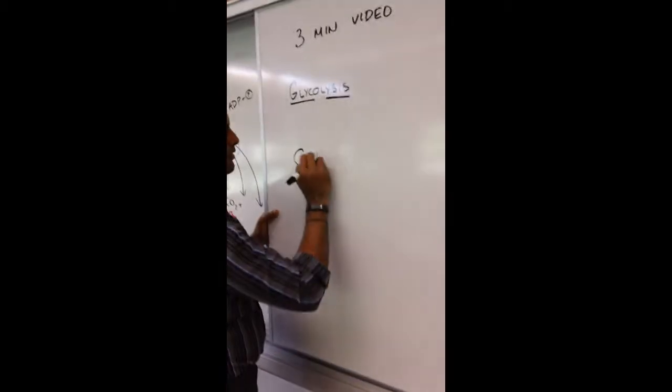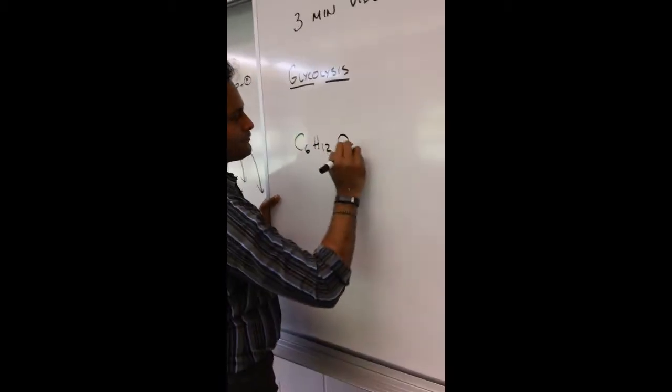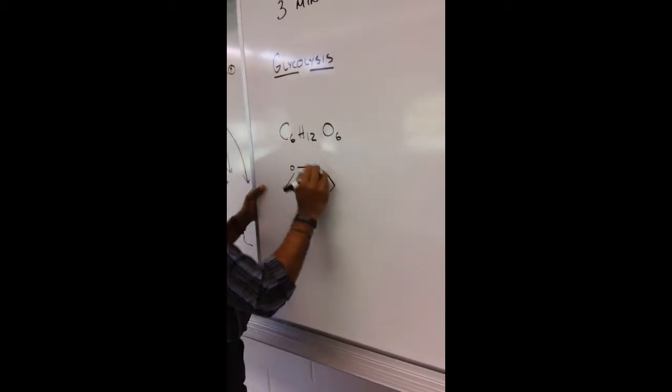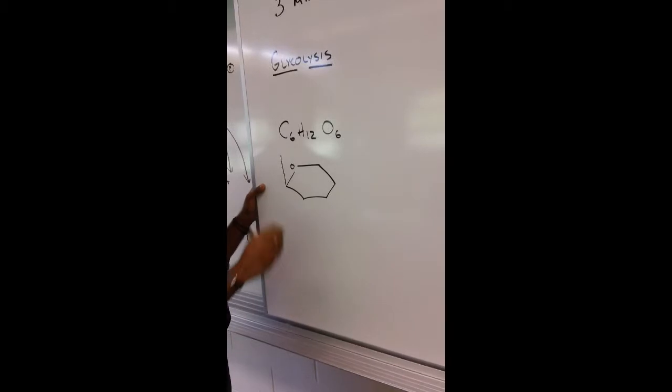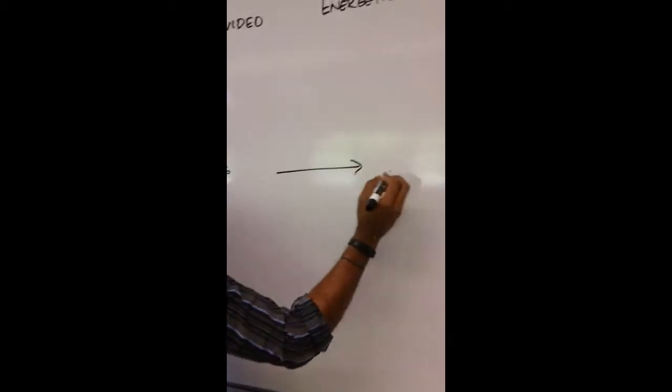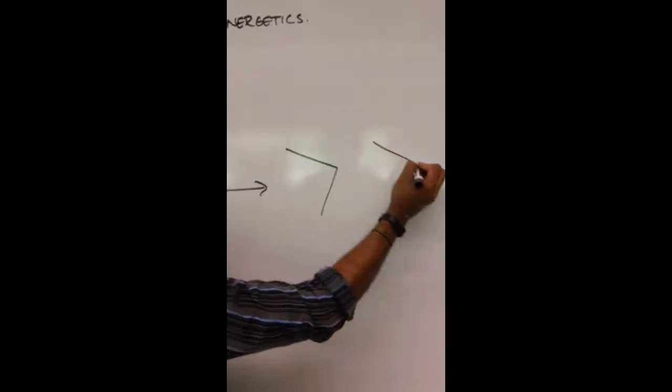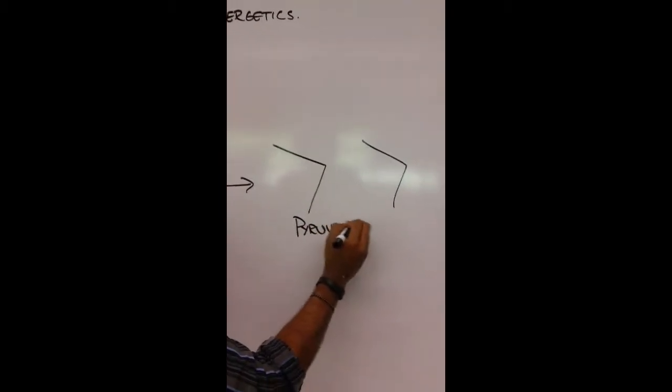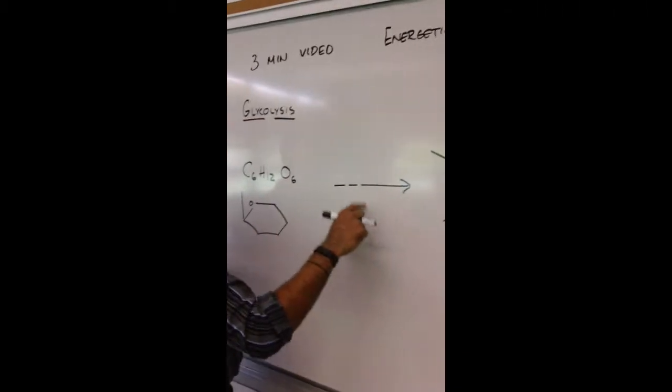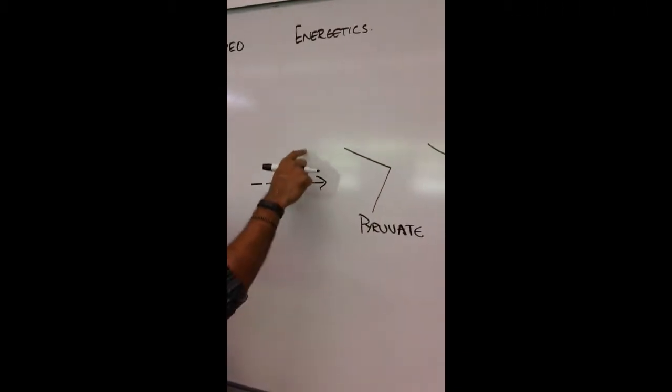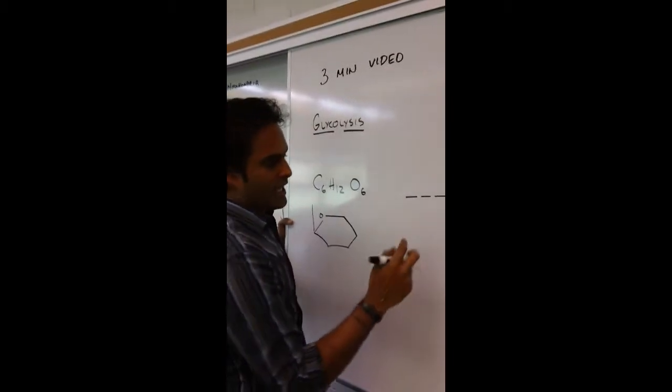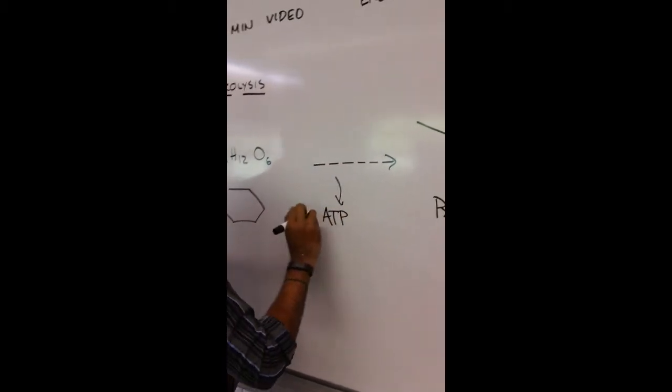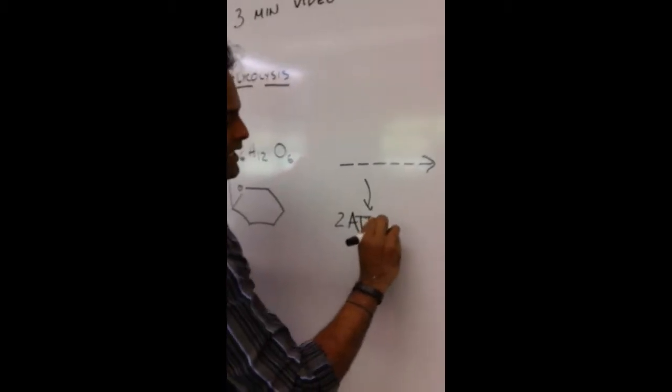You take glucose, which looks like this, basically a six-carbon ring, and you break it down into two three-carbon molecules called pyruvate. You do this slowly in the process of several steps, each using an enzyme, and you generate ATP and NADH.